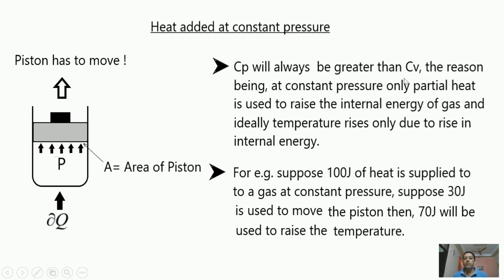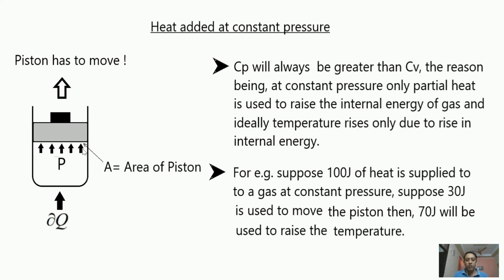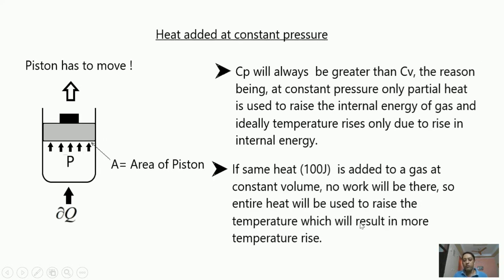The conclusion is that Cp will always be greater than Cv. When 100 joules are added at constant pressure only 70 joules raise the temperature, whereas at constant volume no work is done, so the entire heat converts into internal energy and raises the temperature. Since temperature depends only on internal energy, only partial heat is converted to internal energy at constant pressure, so less temperature rise occurs for the same heat input. Therefore, more heat is required at constant pressure than at constant volume to raise 1 kg of gas by 1 degree centigrade, meaning Cp is always greater than Cv.